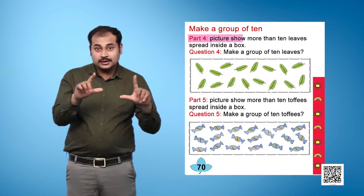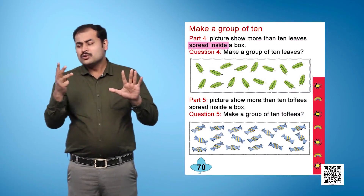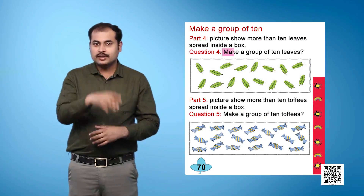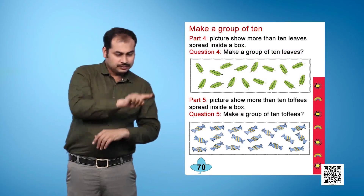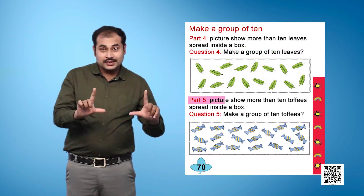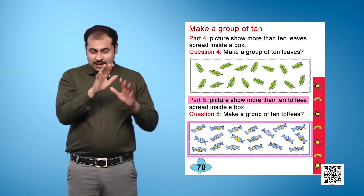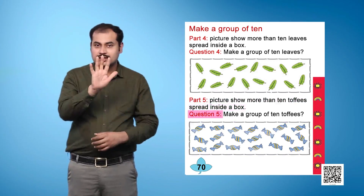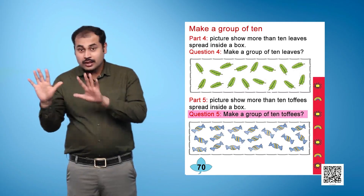Part 4 picture shows more than 10 leaves spread inside a box. Question 4: Make a group of 10 leaves. Part 5 shows more than 10 toffees spread inside a box. Question 5: Make a group of 10 toffees.